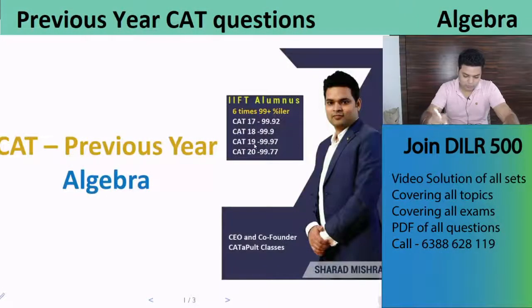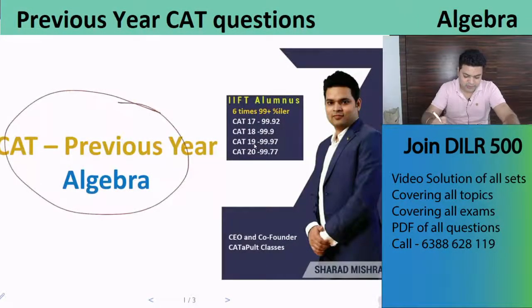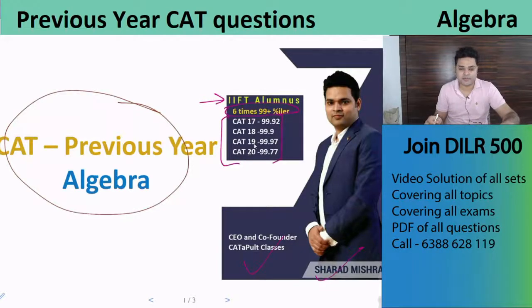Hello everyone. So I'm going to solve another CAT previous year question under the algebra section. My name is Sharad and I am CEO and co-founder of Catapult classes. I'm a pass out of IIT Delhi and 6 times 99 plus percentile. These are my percentiles of CAT in previous years.